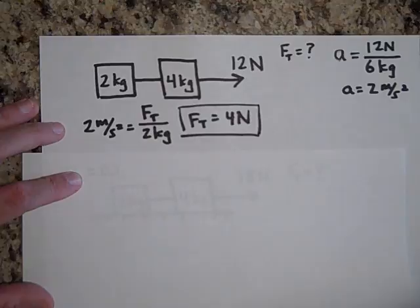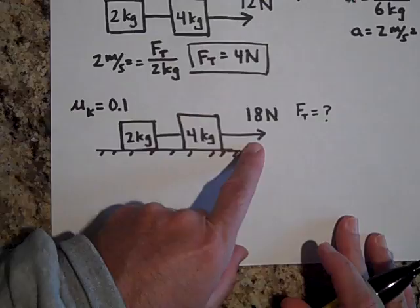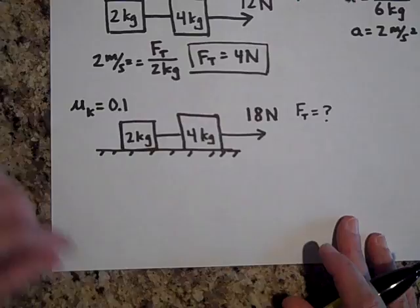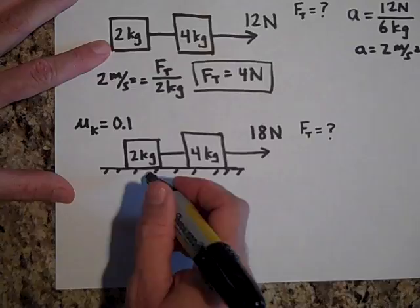Now there is friction. We'll put in a coefficient of friction of 0.1. You pull with 18 newtons. What will be the force of tension in the string connecting the two blocks? Go ahead and pause. We're back. We look at the whole system.